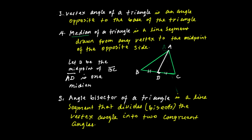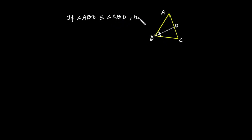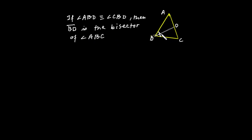Consider triangle ABC. If angle ABD is congruent to angle CBD, then BD is the bisector of angle ABC. Line segment BD is the bisector of angle ABC.